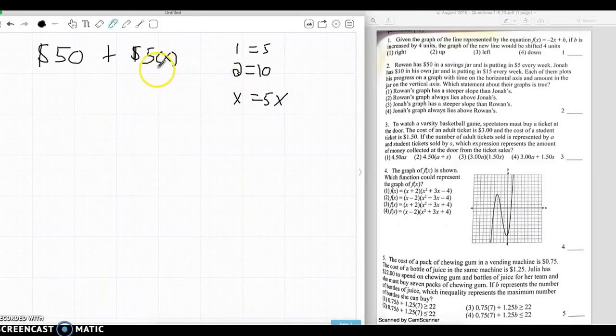And Jonah, he has $10 in the jar, and he's putting in $15 a week. After one week, $15. After two weeks, $30. And then x is 15x.